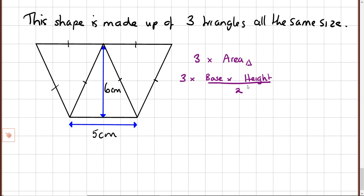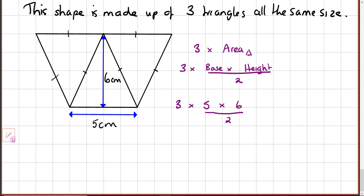So then I've got three multiplied by the base is 5, multiplied by 6, but we have a divide by 2. So we've got 5 multiplied by 6 is 30 divided by 2, so that's 3 multiplied by 15 which equals 45 squares. Good, okay.